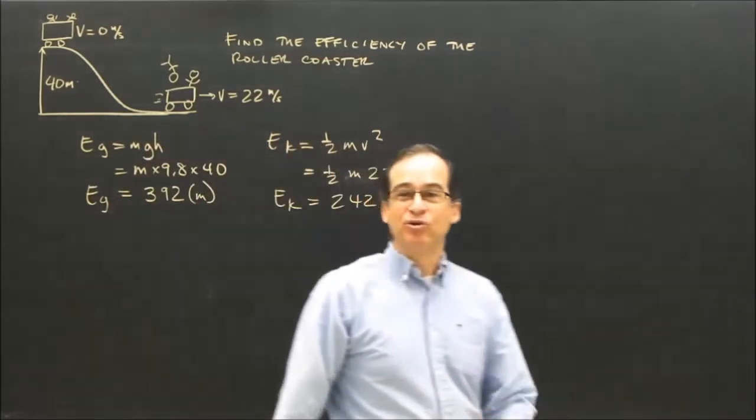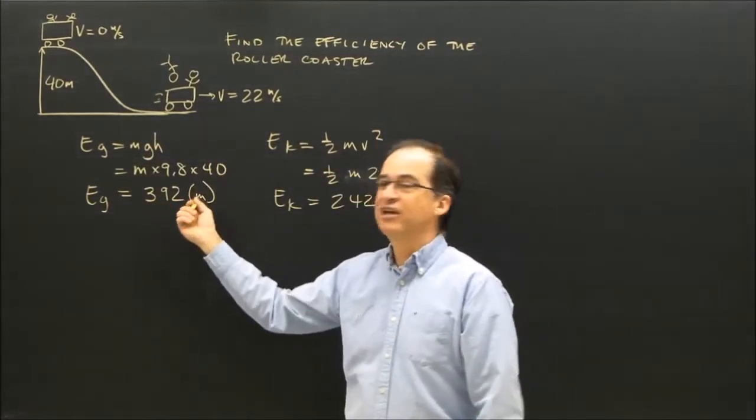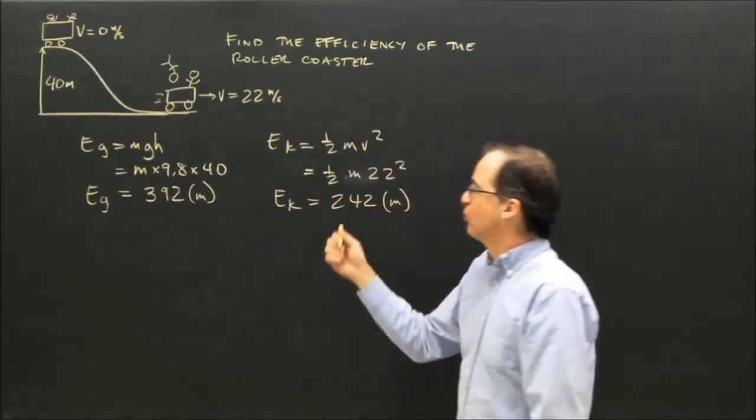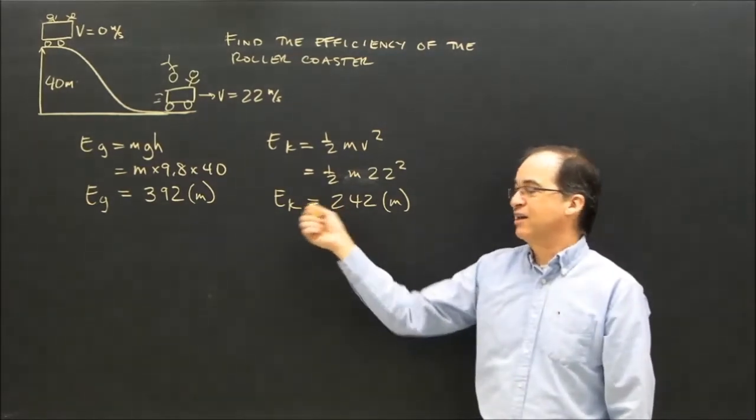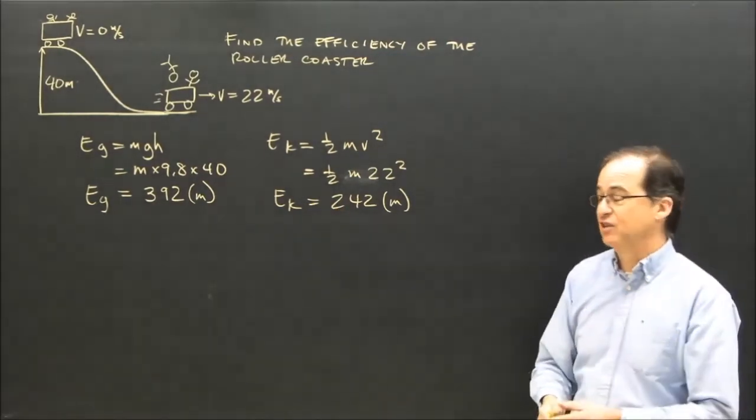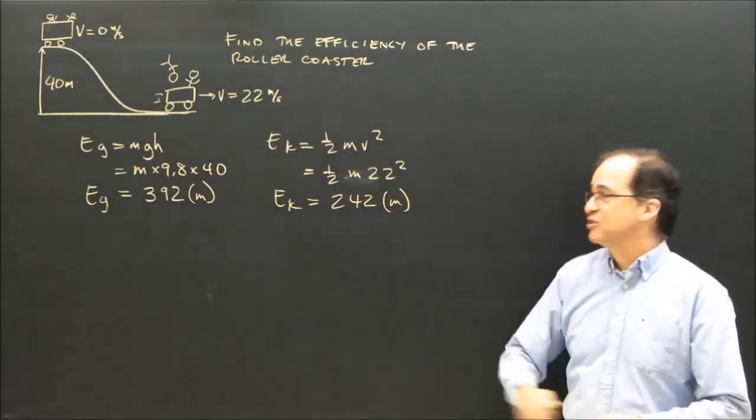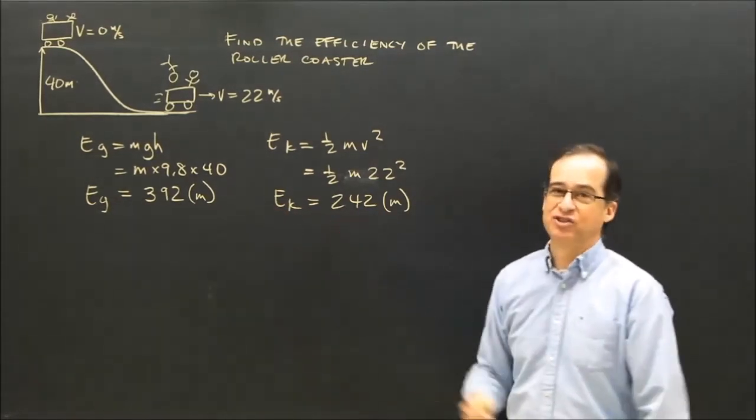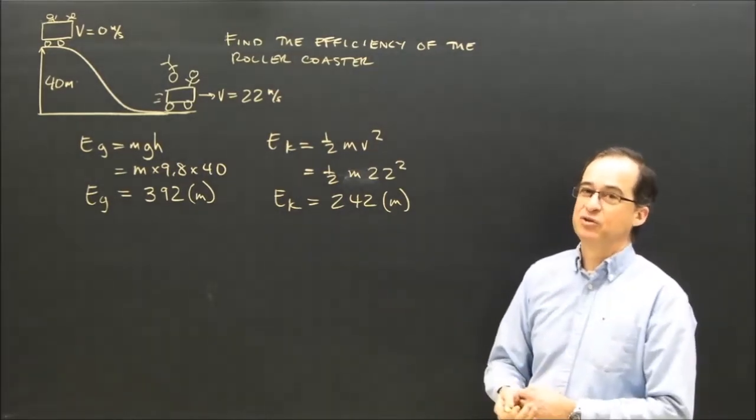The roller coaster started with gravitational energy—392 times the mass in energy. It ended up going down the hill at a speed that gave it kinetic energy of 242 times the mass, since it has no gravitational energy at the bottom. You can see I've lost some energy. The efficiency is a comparison of how much you got out to how much you put in.